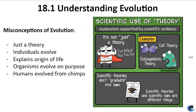Another misconception is thinking individuals evolved during their lifetime. Evolution occurs at the population level over generations, with traits changing on average, not in individuals. Evolution doesn't explain life's origin — it describes how species change and diversify over time; life's origins are still being studied. Evolution isn't purposeful — it doesn't strive for improvement. Advantageous traits increase through natural selection based on environmental changes. Furthermore, humans did not evolve from apes. The branching point where humans and apes — including chimpanzees, bonobos, gorillas, and orangutans — diverged in the phylogenetic tree of life was an estimated six to seven million years ago.